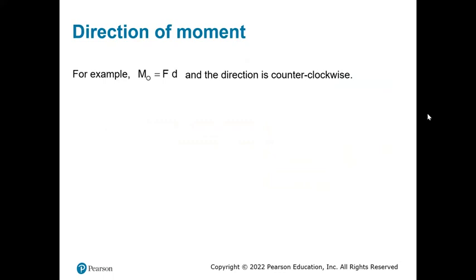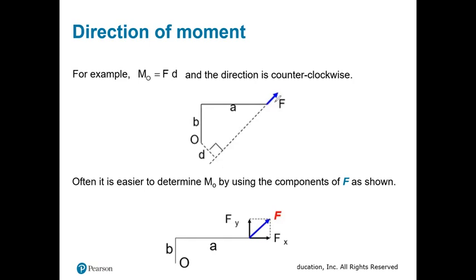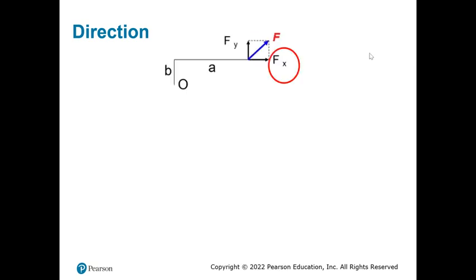For the direction of moment — for example, if the moment equals force times distance and the rotation is counterclockwise, that's positive. Often it is easier to determine the moment by using the components of F in the X and Y directions, especially when forces are inclined and the perpendicular distance is hard to find directly. We resolve into X and Y components and find the moment for each separately.